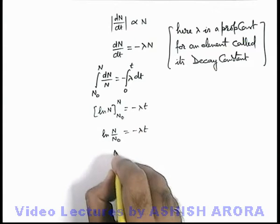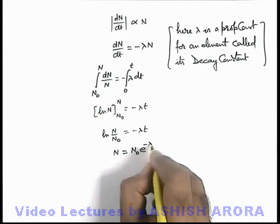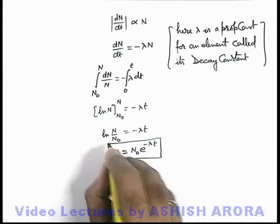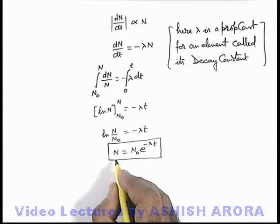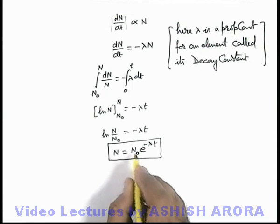So it can be rearranged as: N is equal to N₀ e to power minus λt. This is the relation we are getting for number of parent nuclei which are left at time t, if initial number of nuclei were N₀.